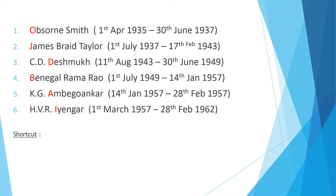The first RBI governor for India is Osborne Smith and the second governor is James Braid Taylor. These two governors served before independence.